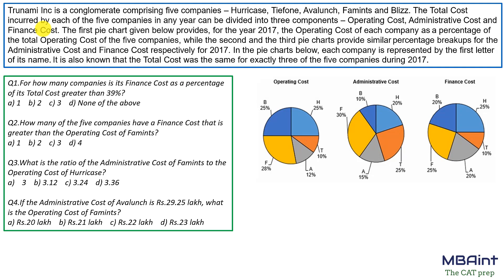Welcome. This is a good set that tests your core concept of ratio, proportion, and typical DI sets. Tranami Inc. is a conglomerate comprising five companies: H, T, A, B, F. The total cost incurred by each company in any year is divided into three components: operating cost, administrative cost, and finance cost. The first pie chart gives the operating cost of each company as a percentage of total operating cost for 2017, while the second and third pie charts provide similar breakups for administrative cost and finance cost respectively.